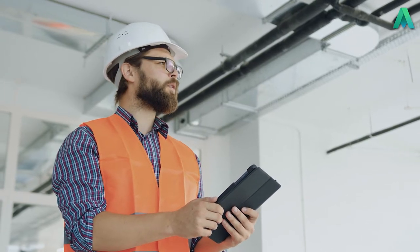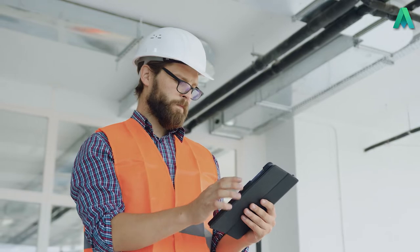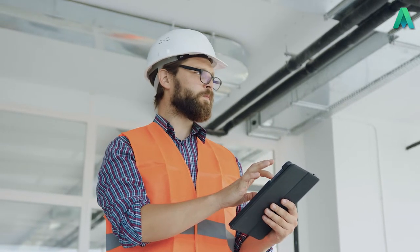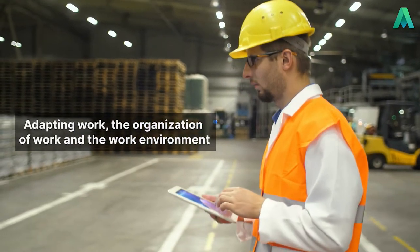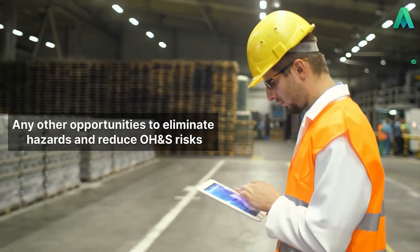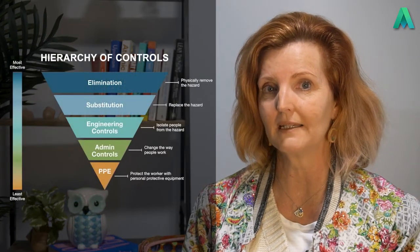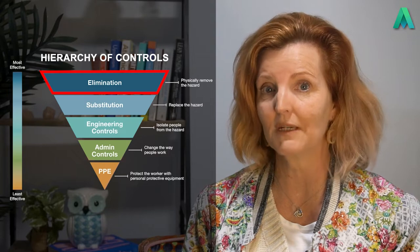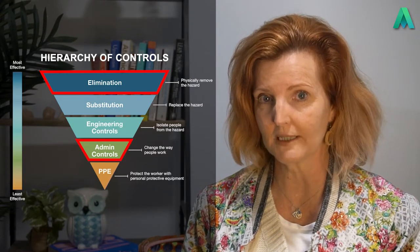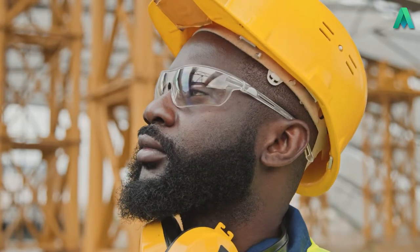This highlights that the process for assessment should consider the OH&S opportunities that are determined, their benefits and their potential to improve the OH&S management system's performance. The reference to adapting work, the organisation of work and the work environment, as well as any other opportunities to eliminate hazards and reduce OH&S risks, is simply recognising that the controls you put in place — whether they come from higher level controls such as elimination or lower level controls such as administration — can be considered opportunities. These should be assessed to determine how well they will work to achieve the elimination of hazards as well as improvement of the OH&S management system.